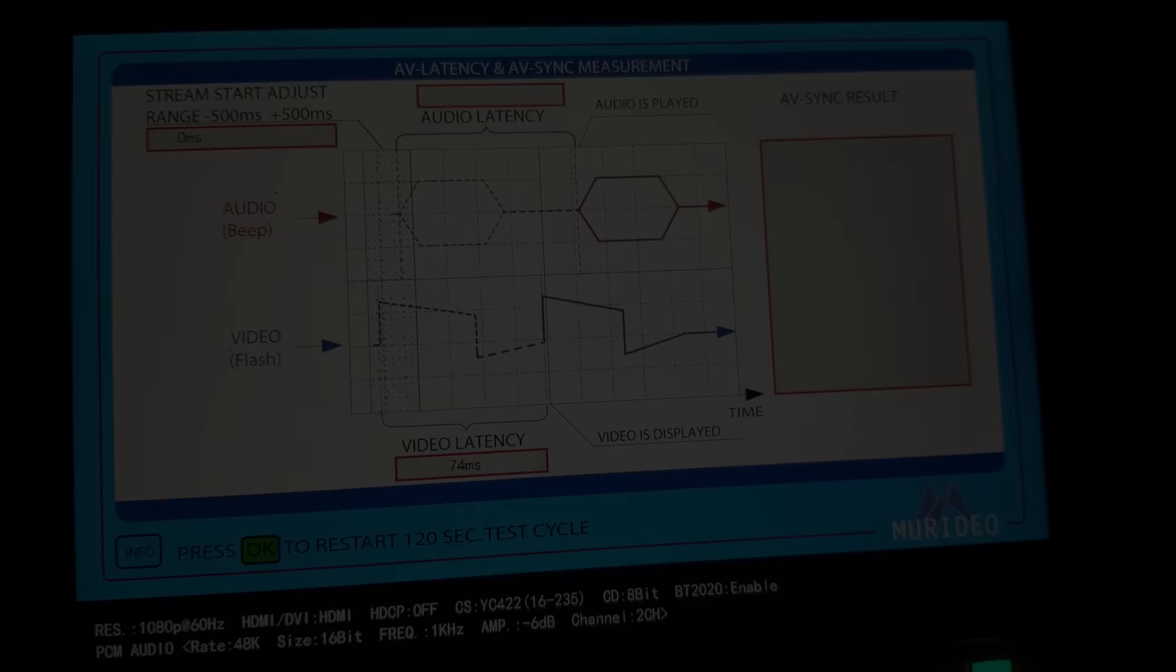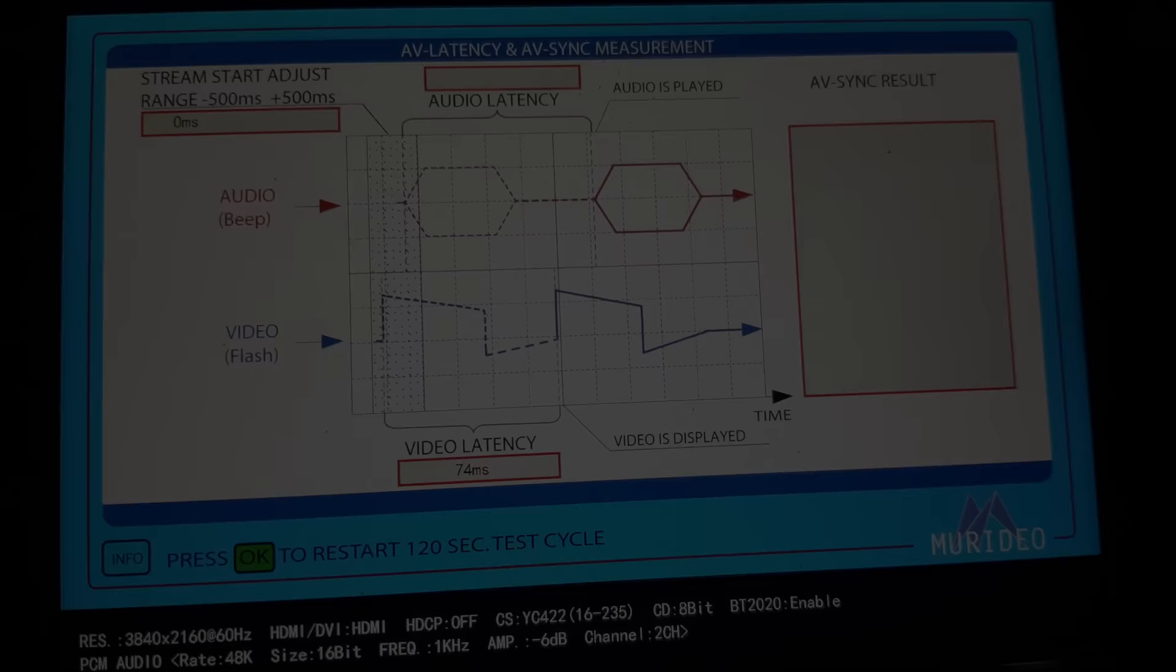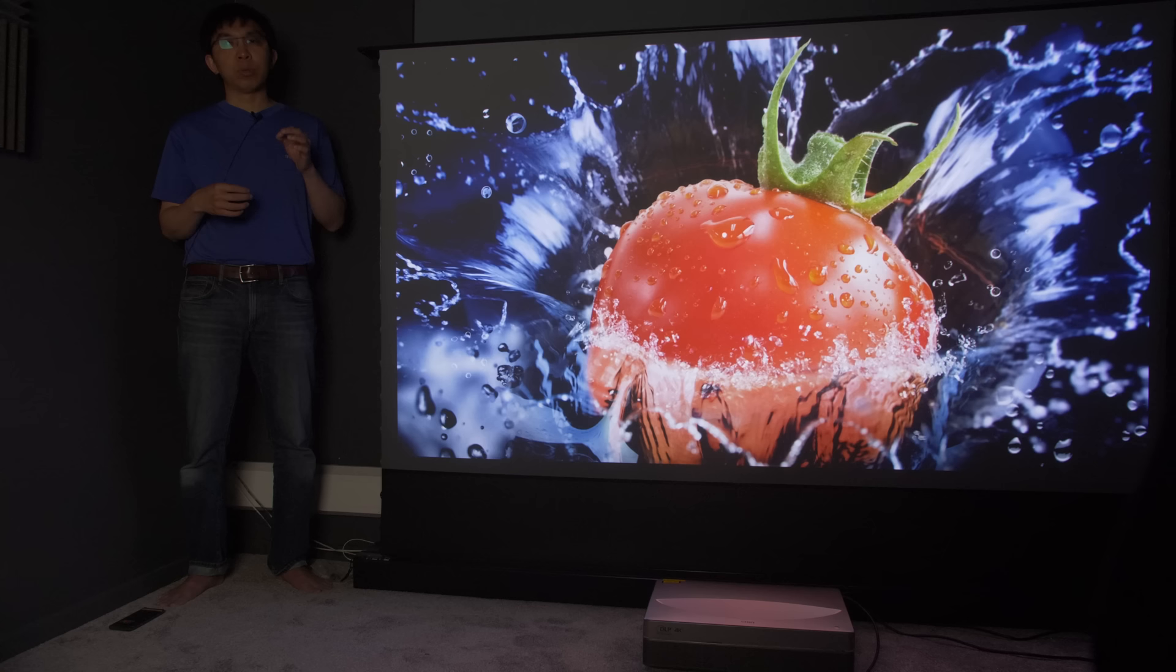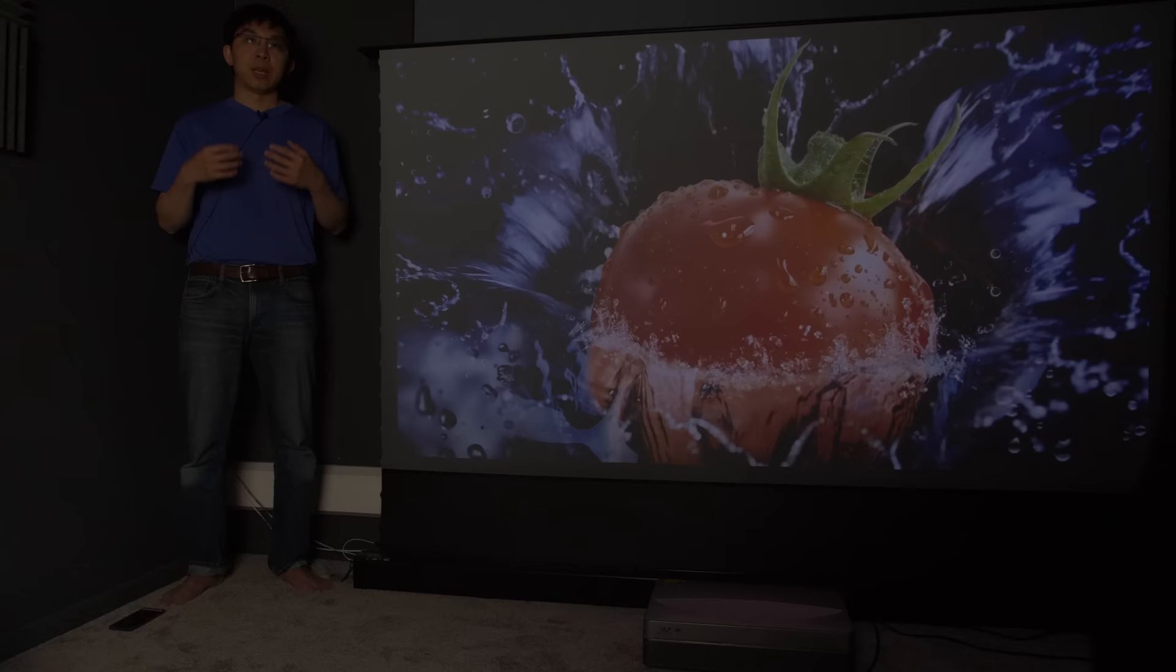To measure input lag for playing games, we used the Bodnar 1G test device which returned a lag time of 74ms for both 1080p HDR and 4K HDR video signals. While this figure is slightly lower than the circa 100ms seen on other Chinese 4K ultra-short-throw projectors, it's still too sluggish for self-respecting gamers to play fast reflex games.